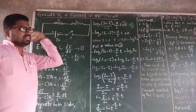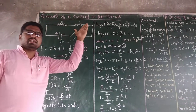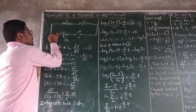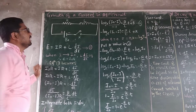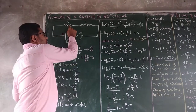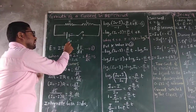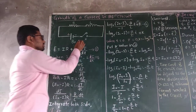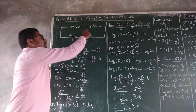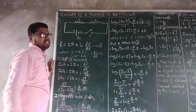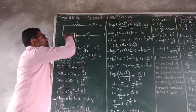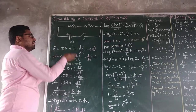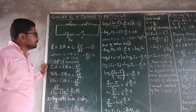Today we are going to discuss the growth of current in an RL circuit. We consider a circuit consisting of resistance, inductance, a battery, and a plug key. When the plug key is switched on, current flows through the circuit, and automatically an EMF is produced.